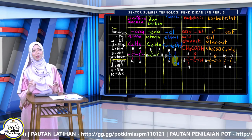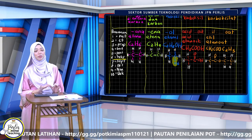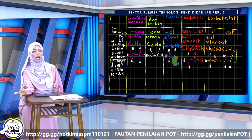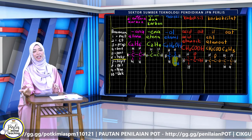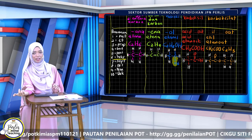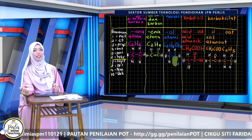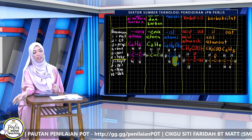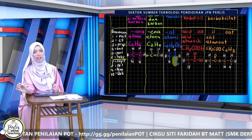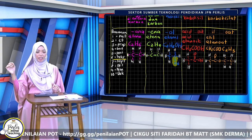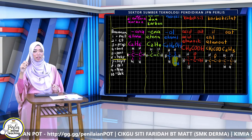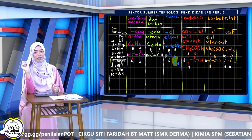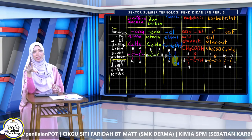Itu awalan. Kalau untuk setiap siri homolog, kita ada akhiran nama dia. Kalau alkana, kita akhirkan dengan 'ana' — bahasa Inggeris A-N-E: ethane, methane. Alkohol, '-ol'. Kalau asid karboksilik, '-oic acid' — maksudnya etanoic, metanoic. Bahasa Inggeris: methanoic acid. Untuk ester, dia bergantung kepada alkohol dan asid karboksilik yang digunakan. Akhirannya, alkohol jadi '-il' — contohnya etanol jadi etil. Kalau asid karboksilik, asid etanoic bertukar jadi etanoat.